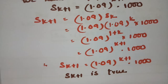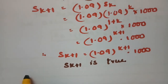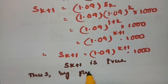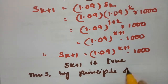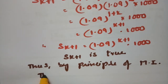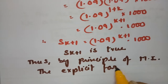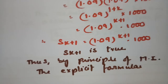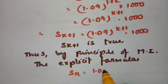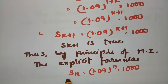Since the result is true for n = 0, and assuming true for n = k implies true for n = k + 1, by the principle of mathematical induction the explicit formula is proven: Sn = 1.09^n × 1000.